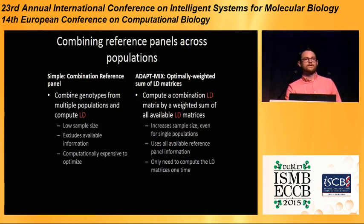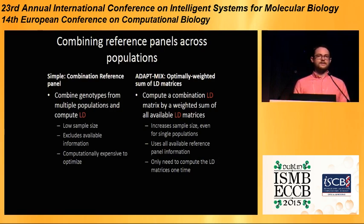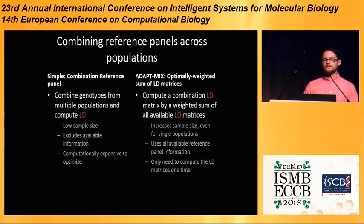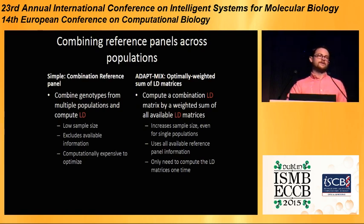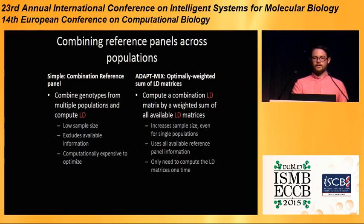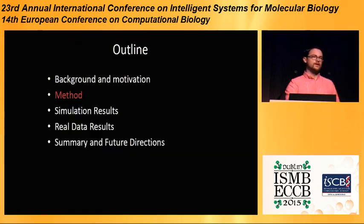One simple approach would be to use a combination reference panel consisting of genotypes from more than one population — if you have someone that is 60% African and 40% European, you would take 60 African genomes and 40 European genomes and compute the LD matrix. But this has a lot of problems: low sample size, excluding a lot of available information, and it's computationally expensive to optimize, since you have to recompute the LD matrix every single time. So what we propose is an approach called ADAPT-MIX, which optimally weights a sum of LD matrices. You compute the LD matrix once for each population, then optimize the weighted sum until you get one that closely approximates the one for your population. This increases the sample size even for single populations and only requires computing the LD matrices one time.